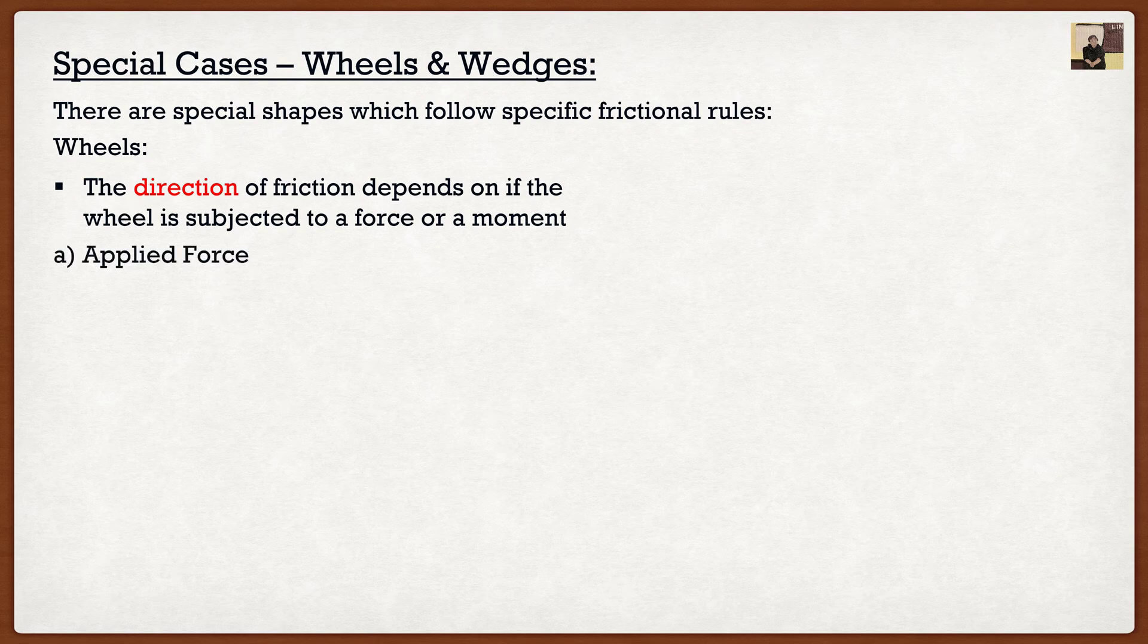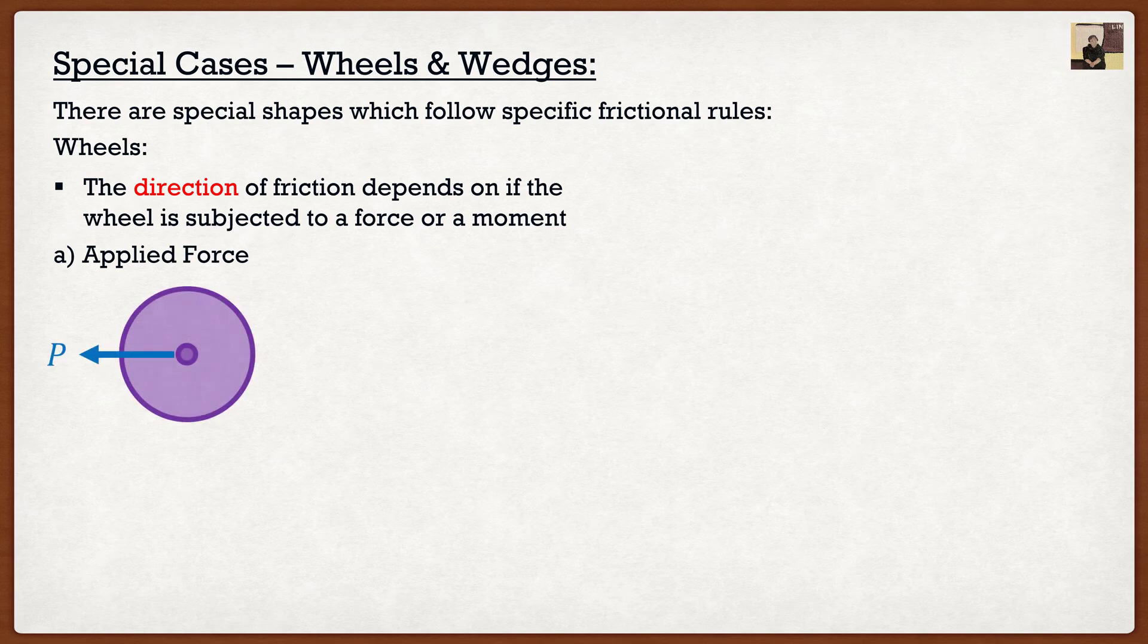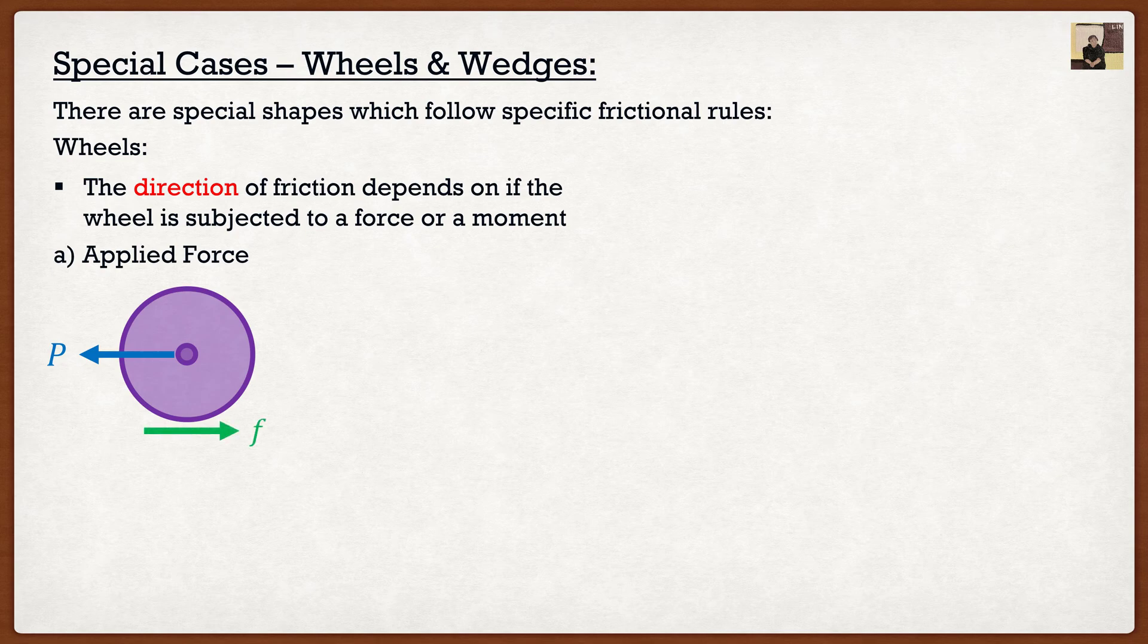So let's look at the case of an applied force. If I were to take a wheel and I were to just pull along its axle, we know that of course our frictional force is going to go opposite. Let's pretend that this wasn't a wheel. Let's just pretend that this was a box. Well this is the same scenario. If I'm pulling to the left, well my frictional force must go to the right.